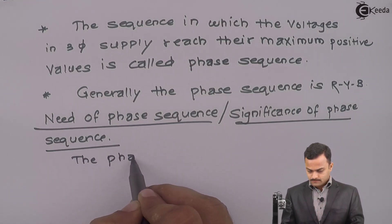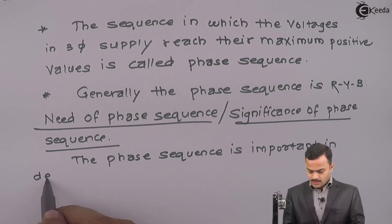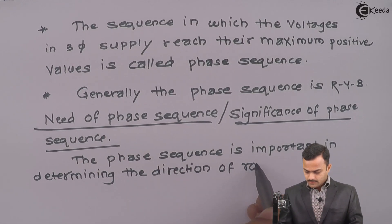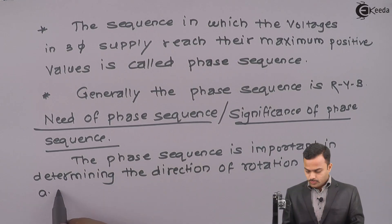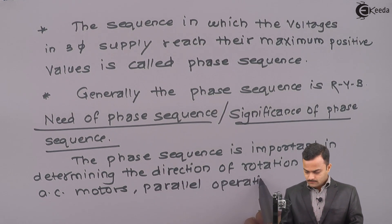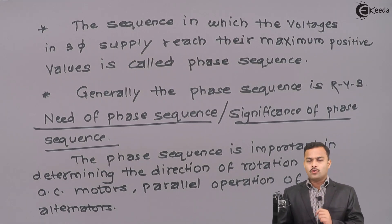The phase sequence is important in determining the direction of rotation of AC motors and parallel operations of alternators. It is very important to note down in which direction motor is moving and if you change the phase sequence the direction of rotation of AC motor will get reverse. So, for this reason knowing the phase sequence and connecting motor as per the phase sequence is must. Thank you.